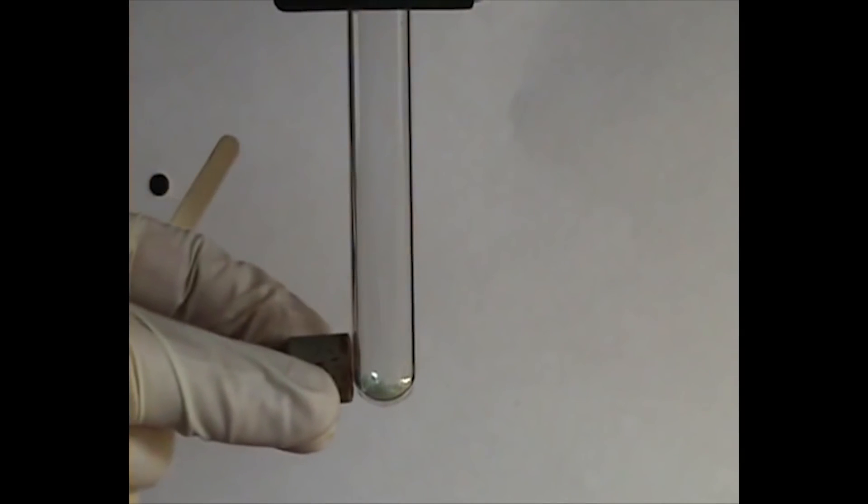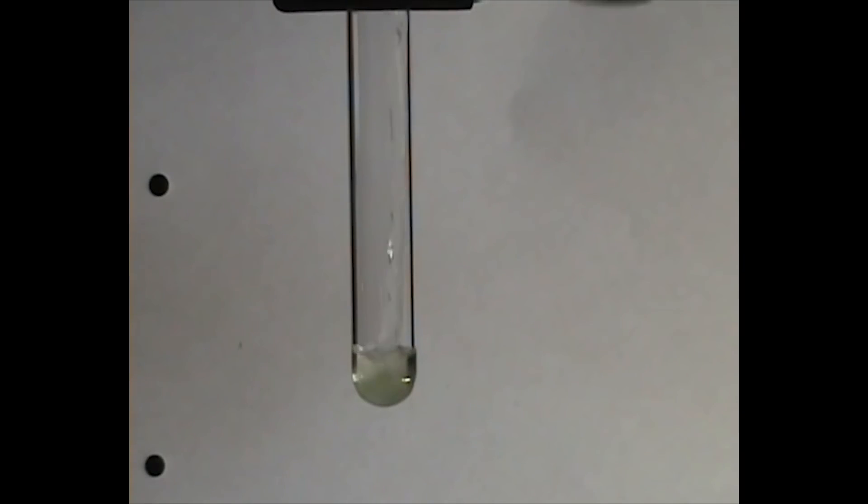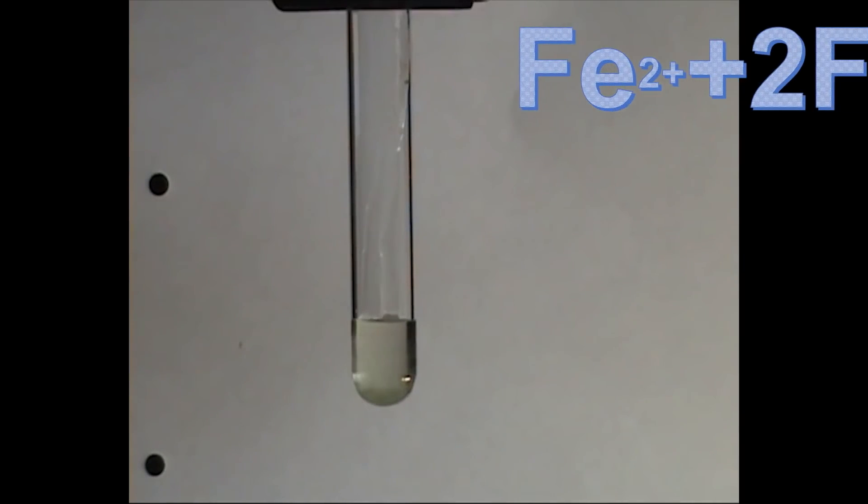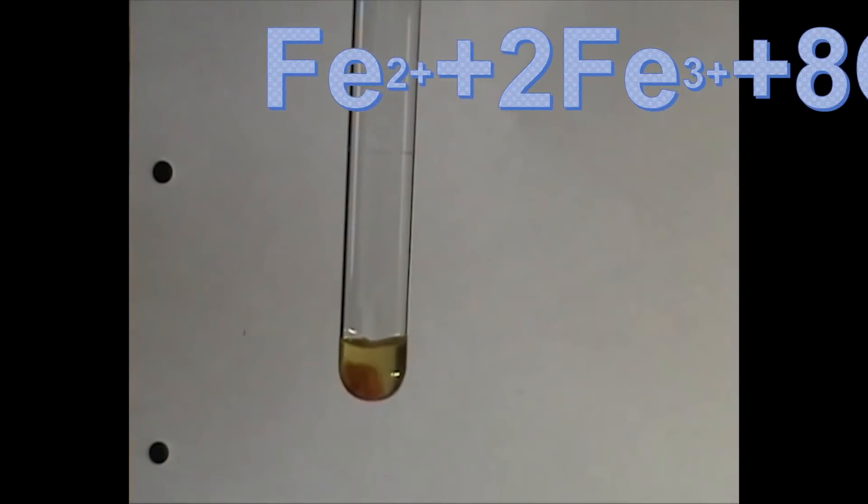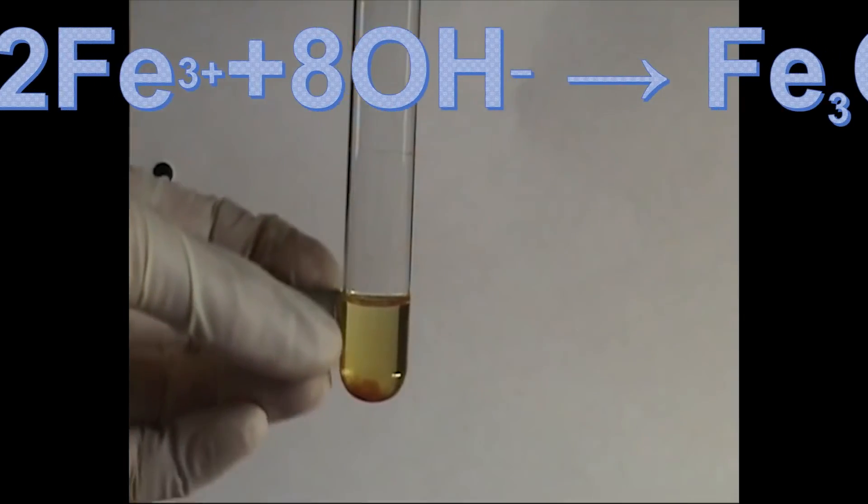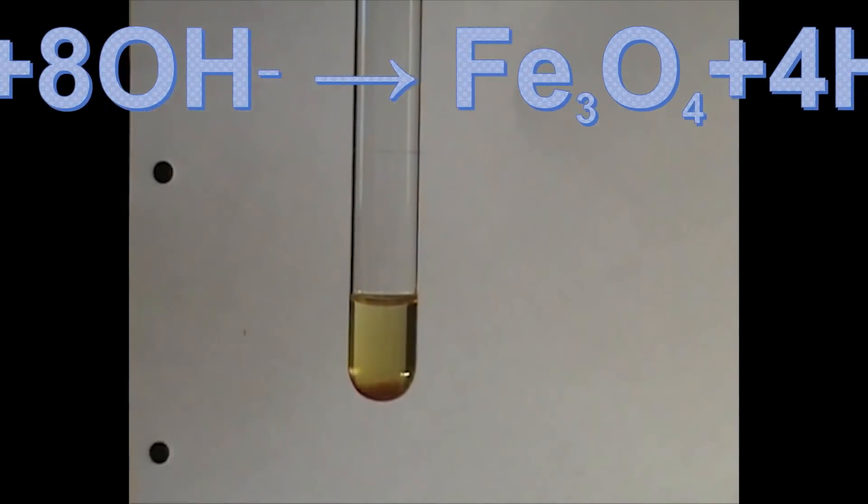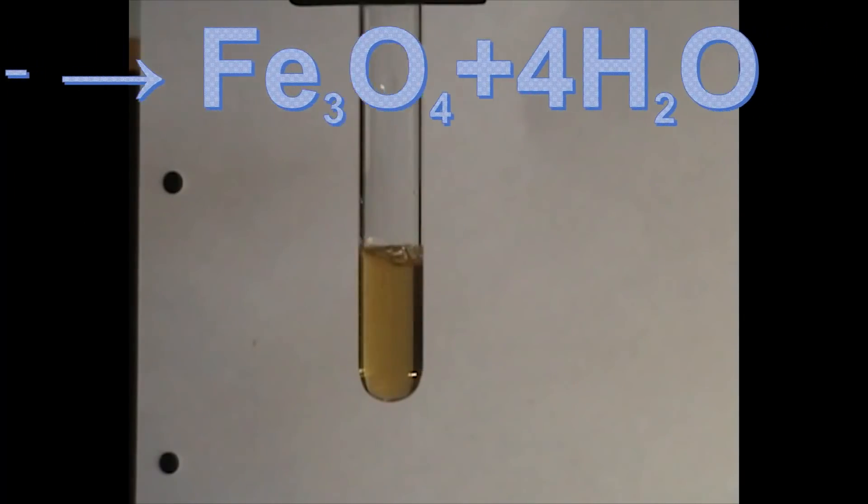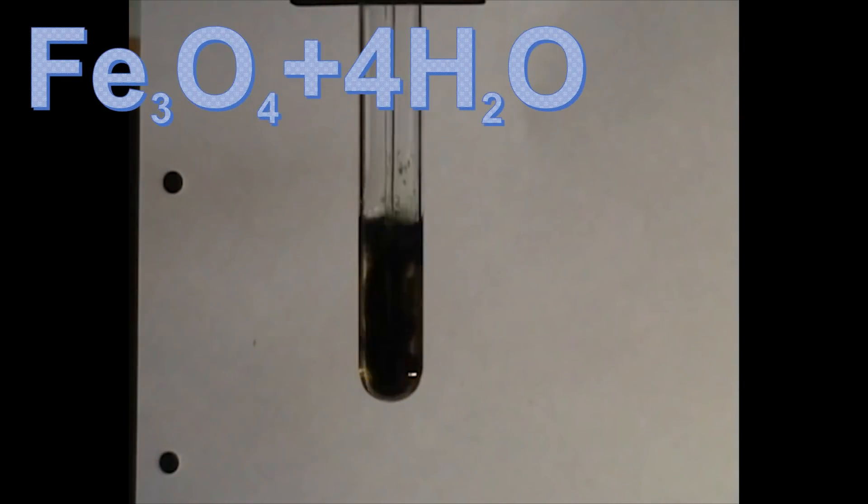To produce the structures that hold and transport the luciferase enzyme used for bioluminescence, iron oxide magnetic nanoparticles, or MNPs, must be synthesized first. To create the MNPs, a solution of ferric and ferrous ions is combined with a base, usually hydroxide. Magnetite then precipitates from the solution.